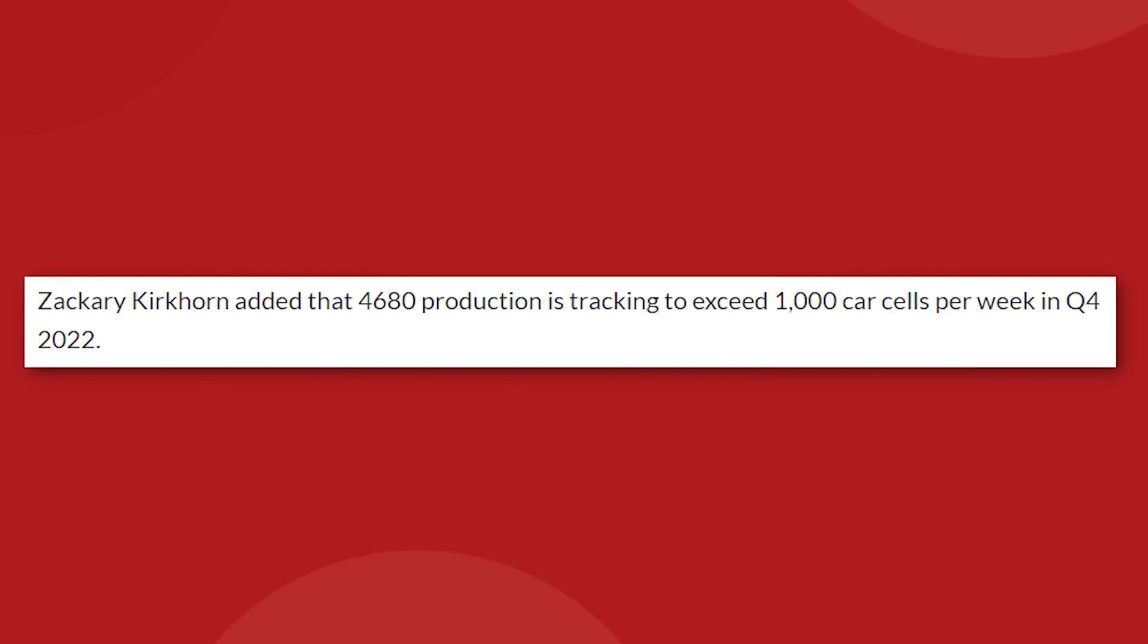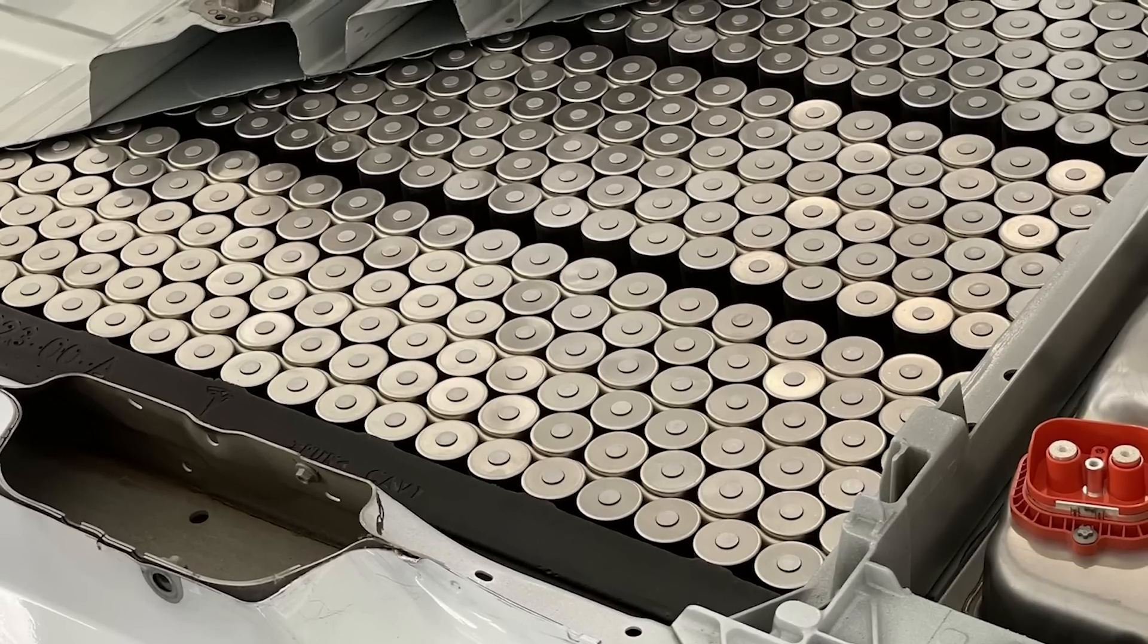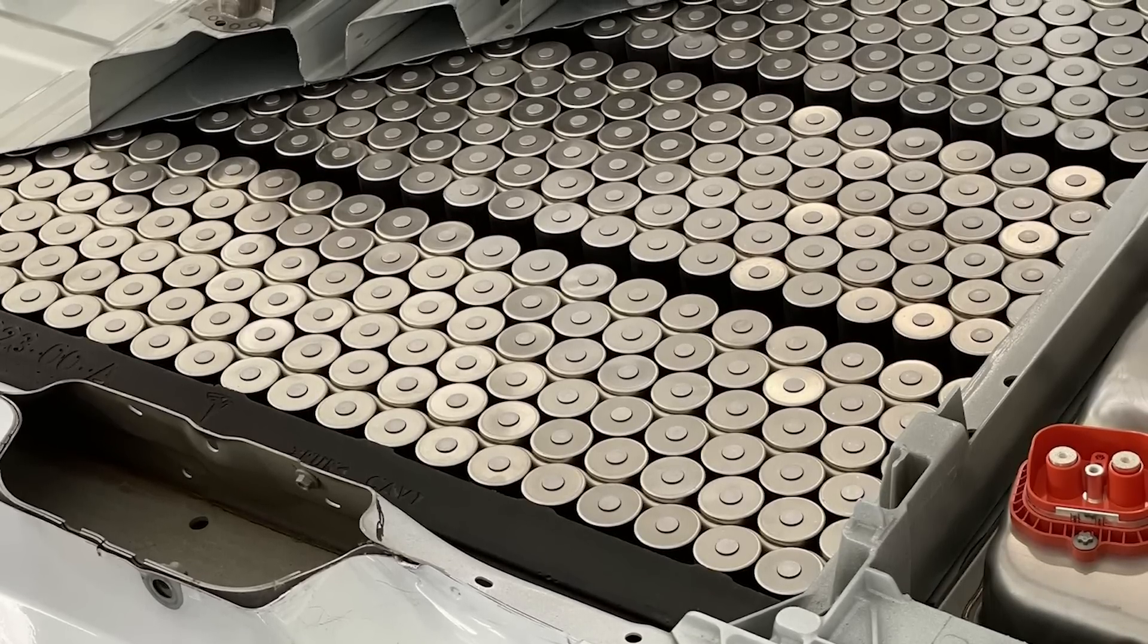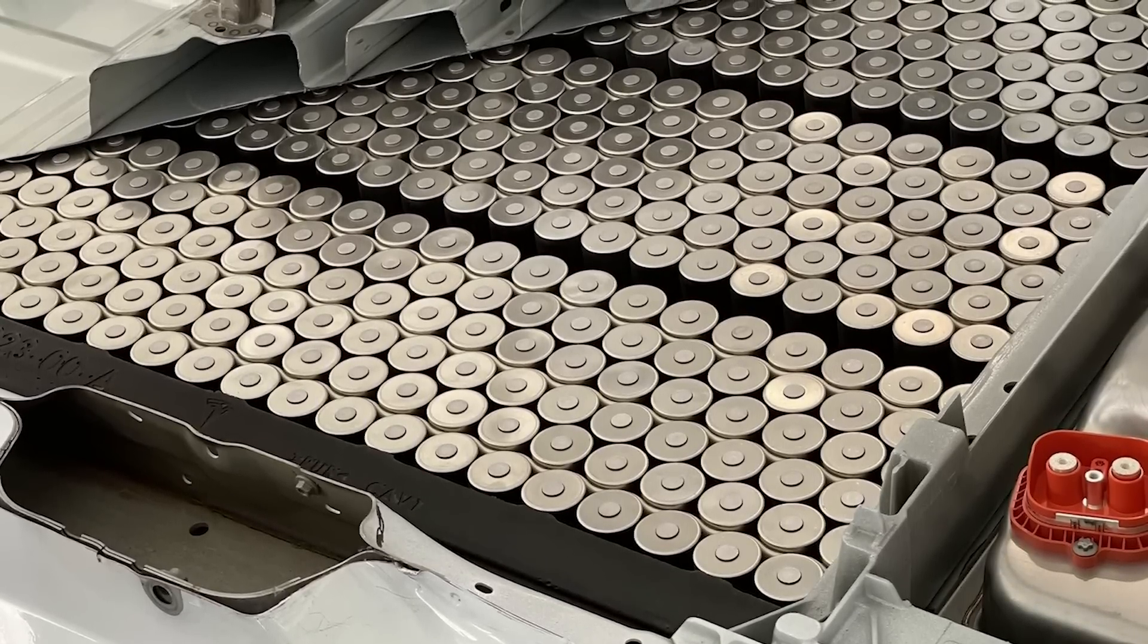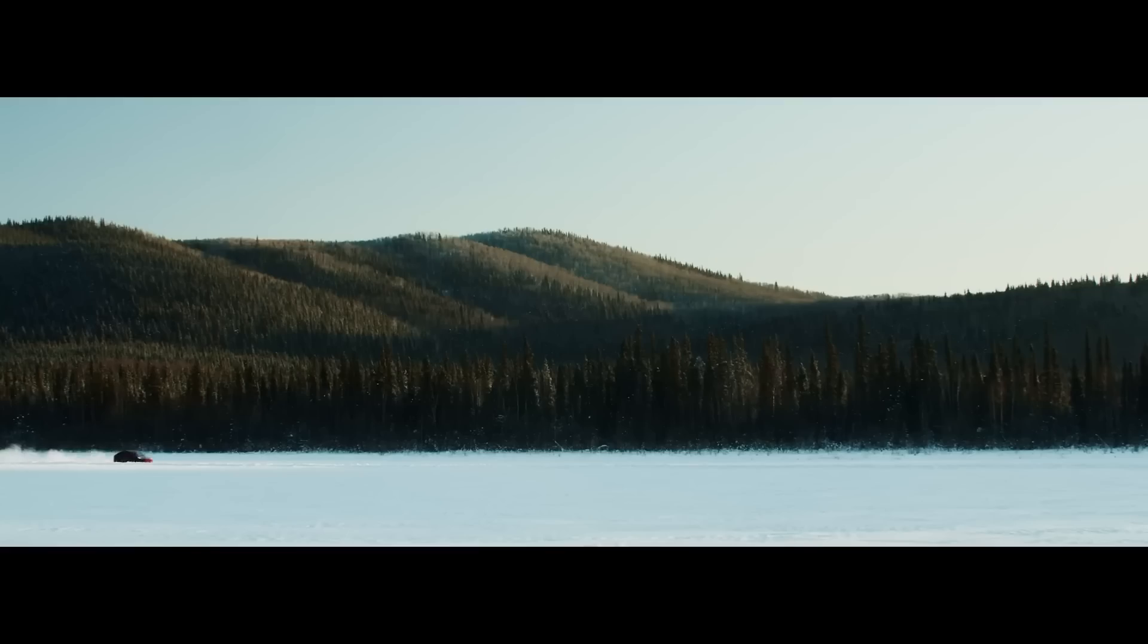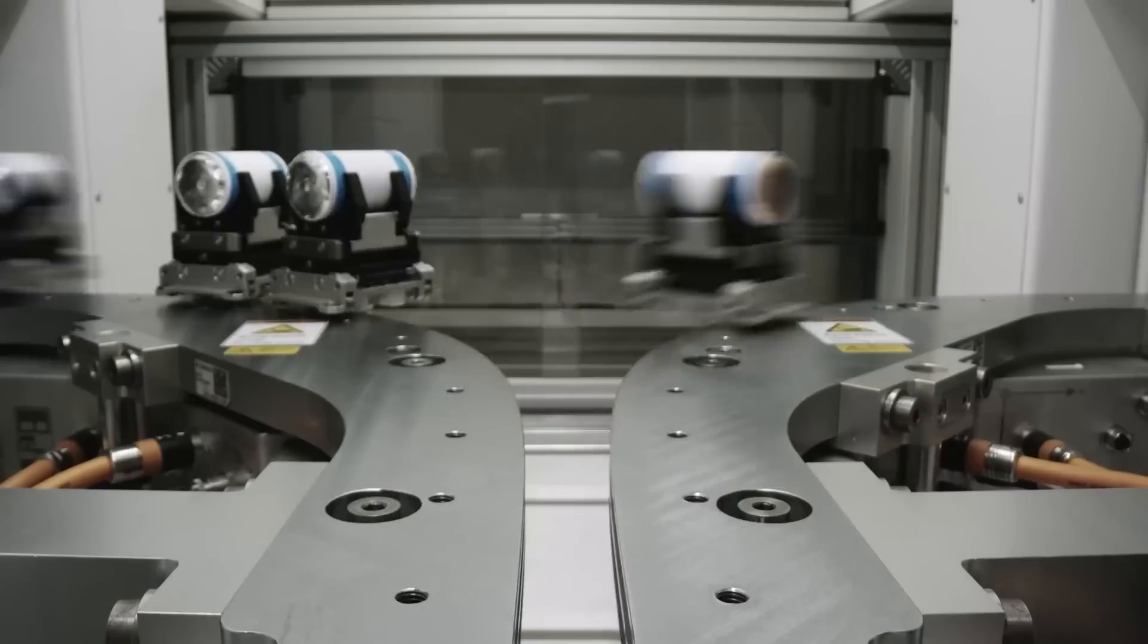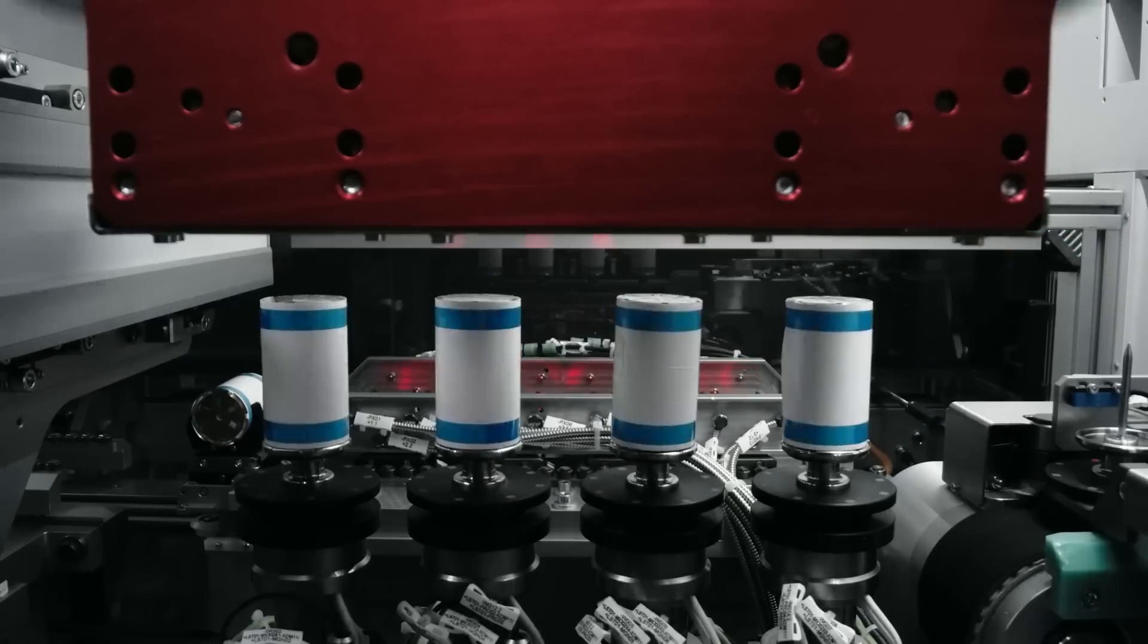The best clarity we got came from one of Elon's executives, who said that production was tracking towards exceeding 1,000 car sets per week in Q4 2022, by which we're pretty sure he means enough battery packs for 1,000 cars per week, but it's not clear which car that would be. The new dual-motor standard Model Y, a long-range Y, a Cybertruck, obviously each would require a different quantity of cells to work.